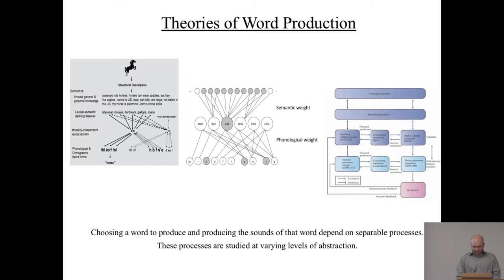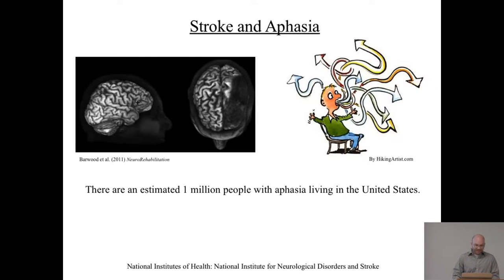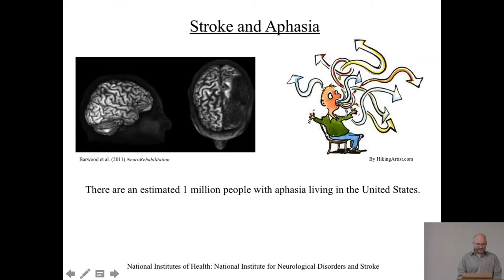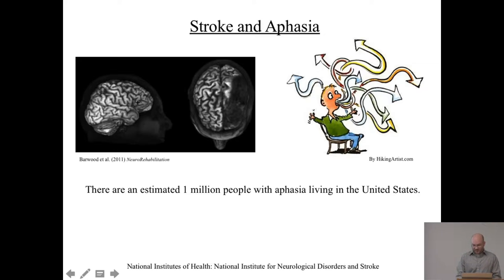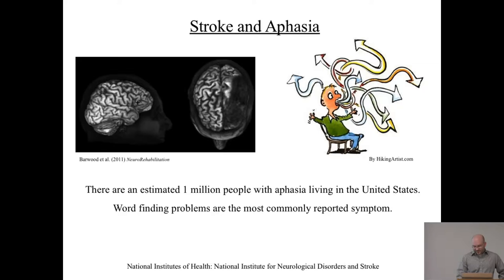So what about people with aphasia? These are folks who have had a left hemisphere stroke. On one side you see a healthy right hemisphere brain, and on the other you can see a very large piece is missing — tissue that has died due to a cerebrovascular accident. There are about a million people living with aphasia in the United States today according to the National Institute for Neurological Disorders and Stroke. When people try to speak, their speech goes off target — a lot of times they're not able to say anything at all. Word finding problems are the most commonly reported symptom across the various types.